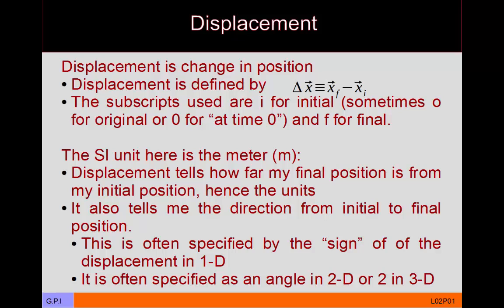For position and displacement, the common SI unit is the meter. In the imperial system you might use feet or miles. In the SI system it's kilometers, meters, or centimeters, and in particular we use MKS units — so meters. The magnitude of displacement must have units of meters, and direction will have units of either radians or degrees.